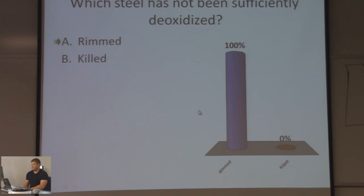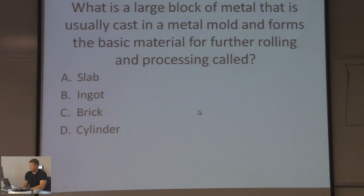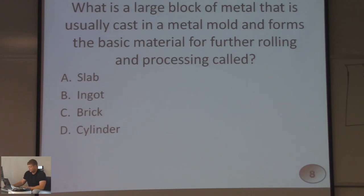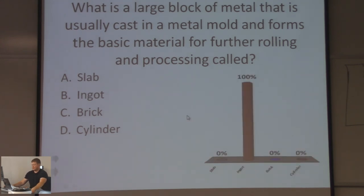What is a large block of metal that is usually cast in a metal mold and forms the basic material for further rolling and processing called? Is it a slab, an ingot, a brick, or a cylinder? You're 100% accurate if you picked ingot.